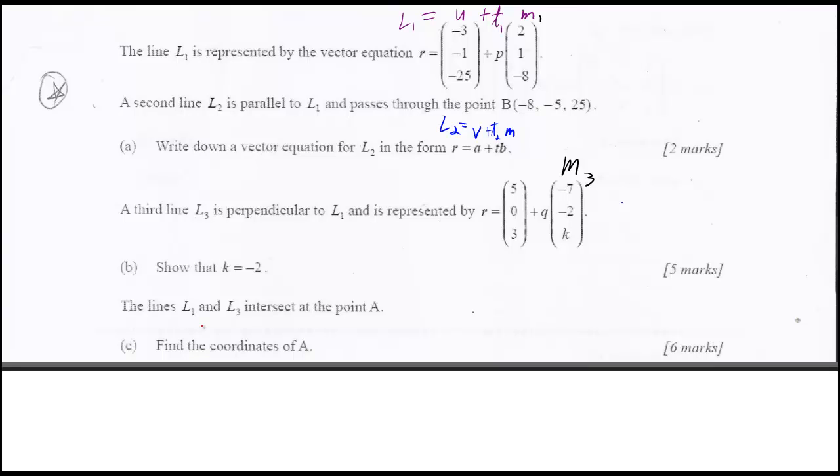For part C, it says the lines L1 and L3 intersect at the point A. Find the coordinates of A.